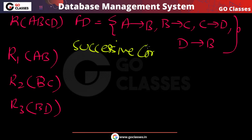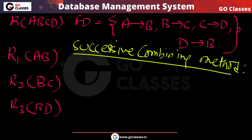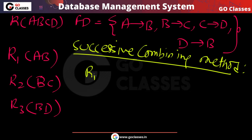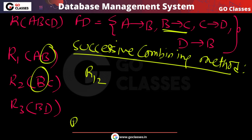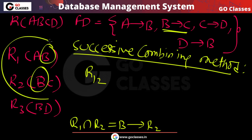Let's apply the successive combining method. Can we combine R1 and R2? The intersection R1∩R2 is the common attribute B. B is a super key in R2(BC) since B→C. So we can combine R1 and R2, giving us A, B, C.